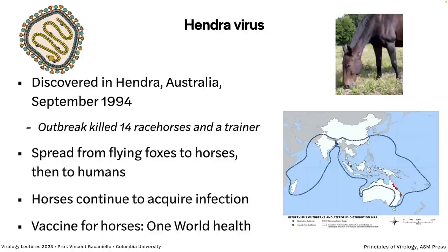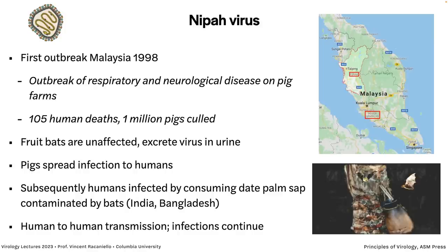The Hendra horse vaccine is a spike protein vaccine, and it also happens to protect against Nipah virus. Nipah virus: an outbreak in 1998 in Malaysia — respiratory and neurological disease on pig farms, starting in the Perak district, then spreading south, and then exported to Singapore via pig transport. There were 105 human deaths, and a million pigs were culled to stop the infection.